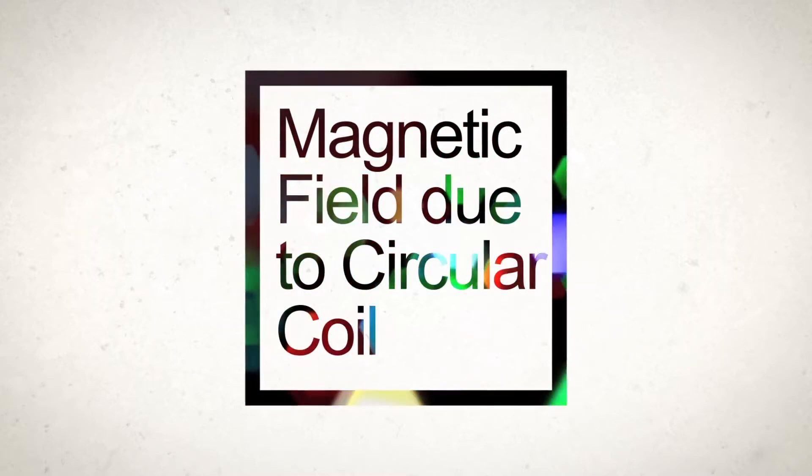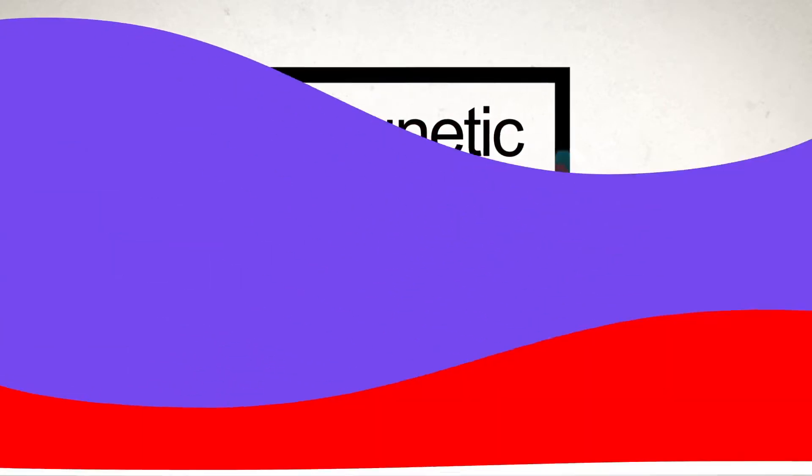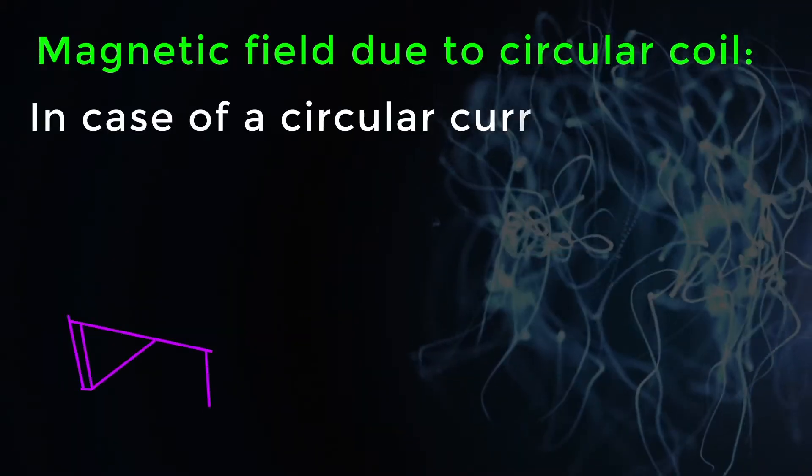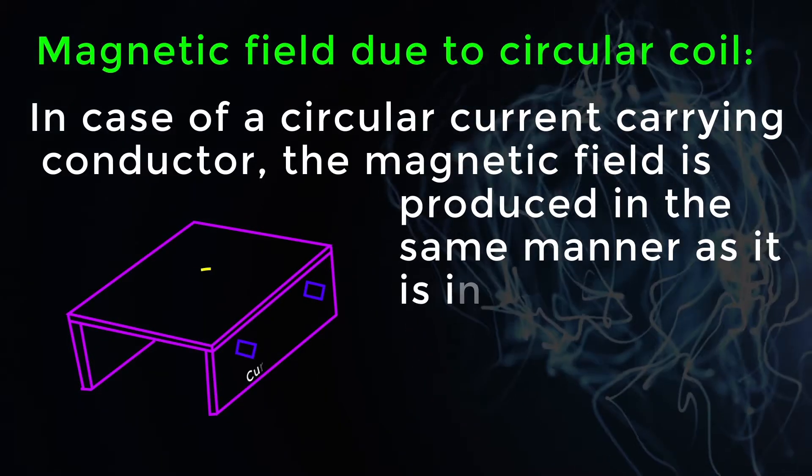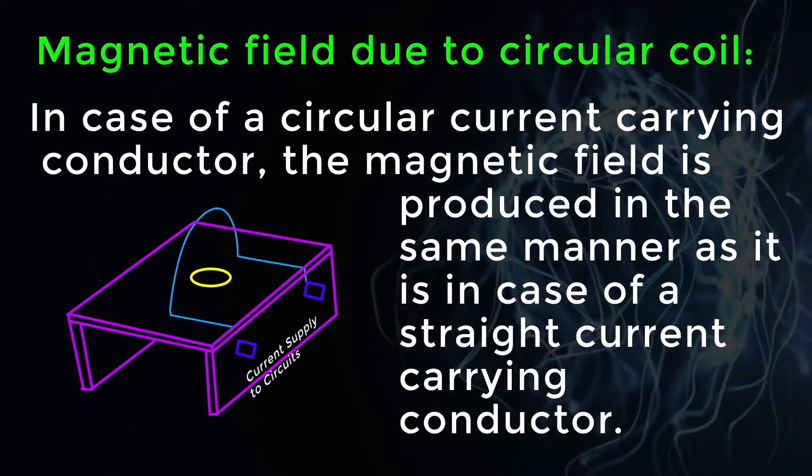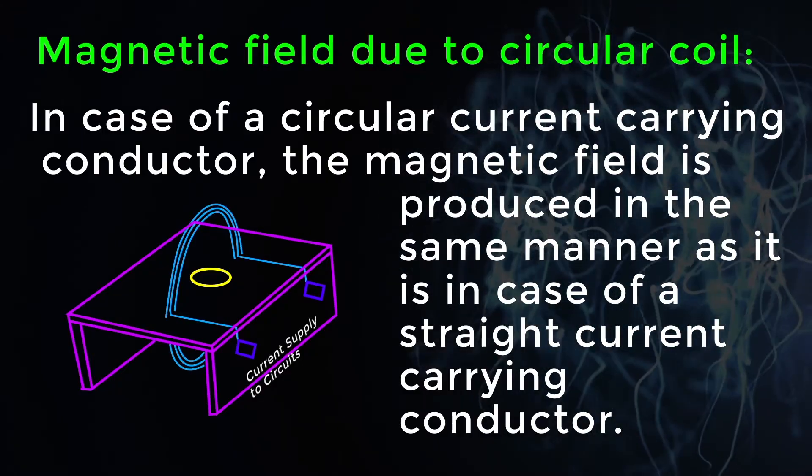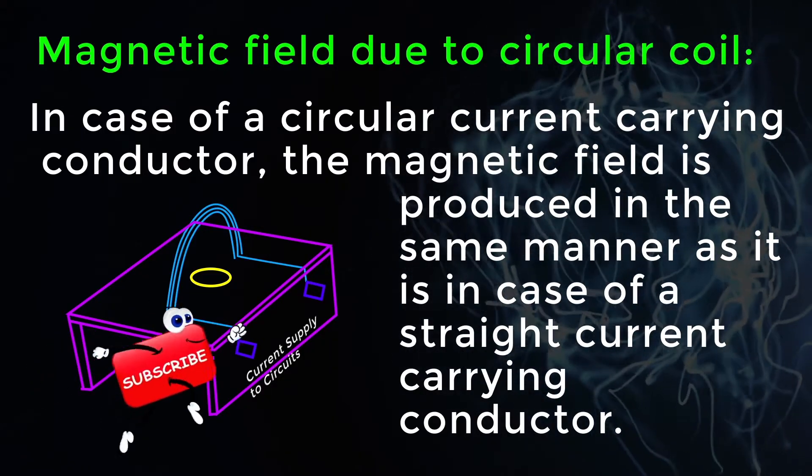Magnetic field due to circular coil. In case of a circular current carrying conductor, the magnetic field is produced in the same manner as it is in case of a straight current carrying conductor.